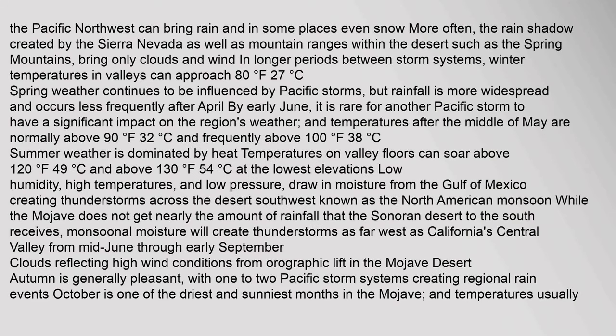The Pacific Northwest can bring rain and in some places even snow more often. The rain shadow created by the Sierra Nevada, as well as mountain ranges within the desert such as the Spring Mountains, bring only clouds and wind. In longer periods between storm systems, winter temperatures in valleys can approach 80 degrees.